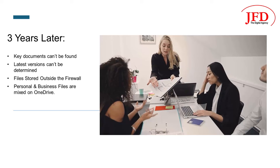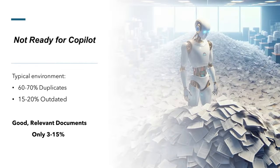The result is that three years later, key documents can't be found, at least not easily. The latest versions can't be determined. Many files are stored outside the organization's firewall in locations like Dropbox and Google Docs, and personal and business documents are mixed on users' OneDrives. This has resulted in environments where 60 to 70% of documents are duplicates. In addition, 15 to 20% of documents are considered outdated or trivial. The good, relevant documents represent as little as 3 to 15% of the total.